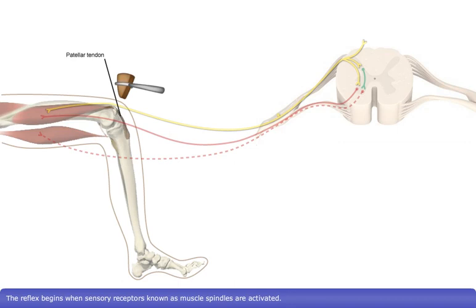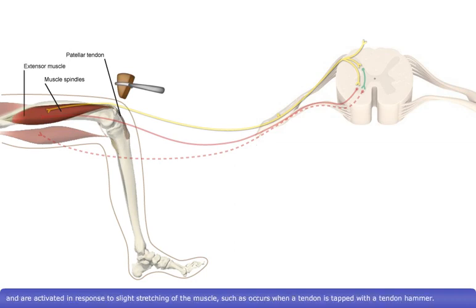The reflex begins when sensory receptors, known as muscle spindles, are activated. Muscle spindles are located in skeletal muscle — in this case the extensor muscles of the knee — and are activated in response to slight stretching of the muscle, such as occurs when a tendon is tapped with a tendon hammer.